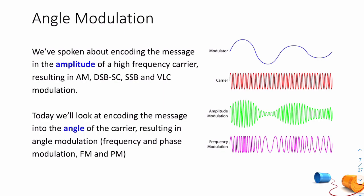On to today's class: angle modulation. We've spoken about how we can encode the message in the amplitude of a high-frequency carrier, giving us variants of amplitude modulation: AM, which is shorthand for DSB-LC; DSB-SC, sometimes just called DSB; SSB, single sideband; and VSB, vestigial sideband. Today we're going to look at what happens if we encode the message into the angle of the carrier.